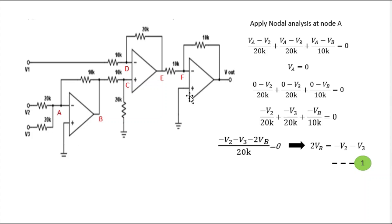We need to calculate V-out — find the relationship between V-out, V1, V2, and V3. We will start from the first stage. This is your first stage, this is your second stage, this is your third stage of the multi-stage amplifier. Irrespective of how many op-amps are connected, always start with the first stage, because the first stage is giving you input and preceding stages give output as per that input.